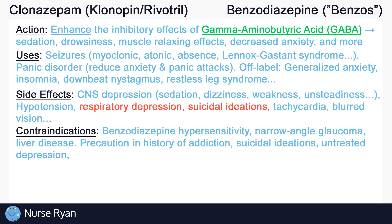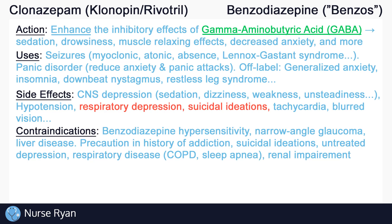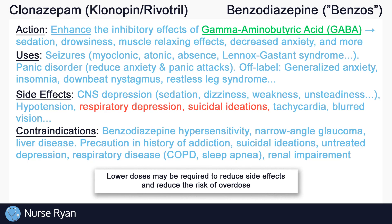Clonazepam should not be given to patients with untreated depression. Also, exercise caution in patients with respiratory disease like COPD or sleep apnea, in patients with renal impairment, and in elderly patients. In all of these patients, doses may have to be lowered.